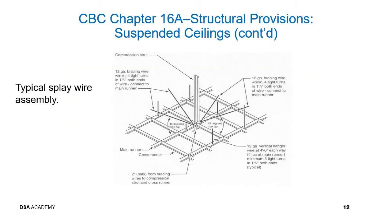This picture shows a typical splay wire assembly. There should be a compression strut, and within two inches of the compression strut and cross runner, there should be 12-gauge bracing wires in four directions. The bracing wire connected to the main runner should have a minimum of four tight turns within 1.5 inches at each end. The 12-gauge vertical hanger wire at four feet on center each way shall have three tight turns within 1.5 inches at each end.